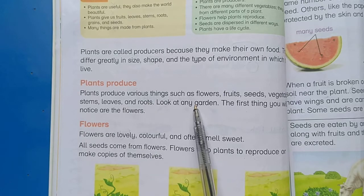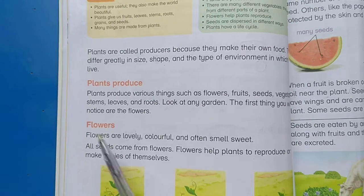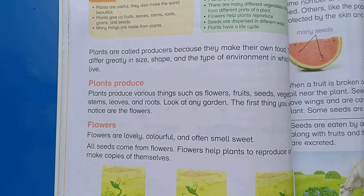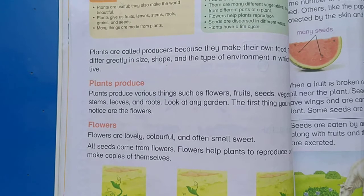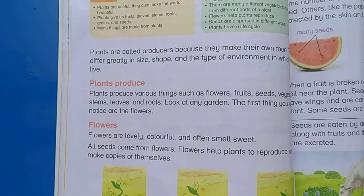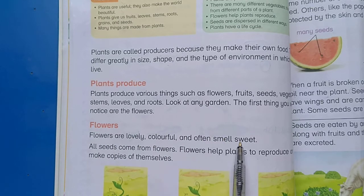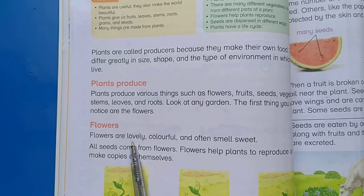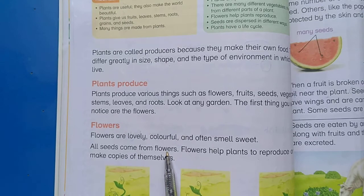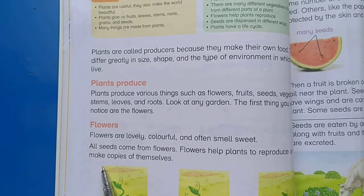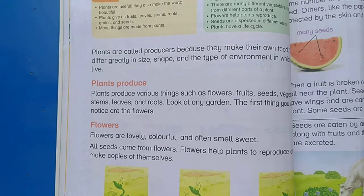Look at any garden — the first thing you will notice are the flowers. Flowers are lovely, colourful, and often smell sweet. All seeds come from flowers. The flowers help plants to reproduce and make copies of themselves.